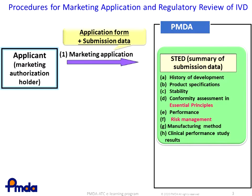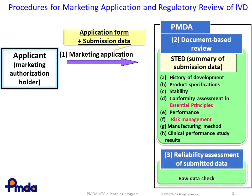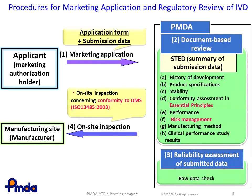The PMDA then reviews submitted documents on items such as product specifications, conformity to essential principles, performance, risk management, and so forth, to confirm the safety and performance of IVDs. The PMDA further reviews submitted raw data to assess data reliability. In parallel, an on-site QMS inspection at the manufacturing site to assess conformity to ISO 13485 will be conducted.